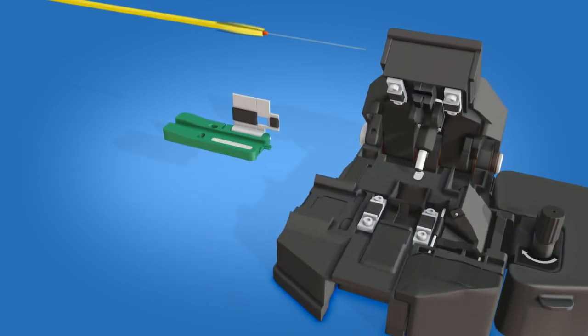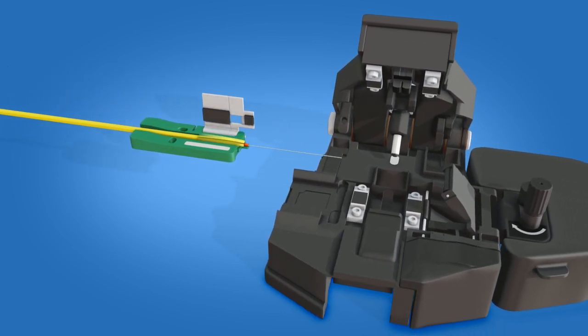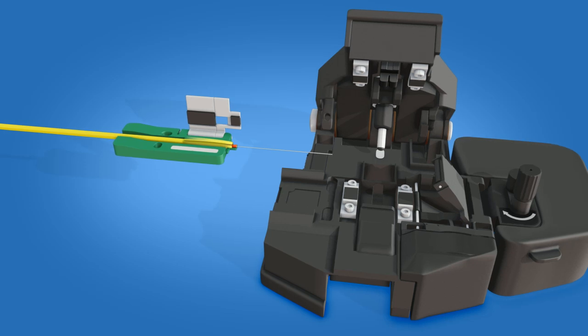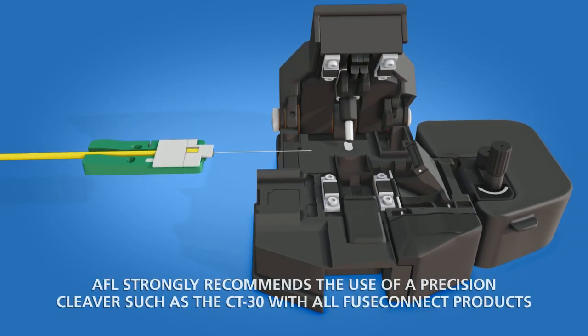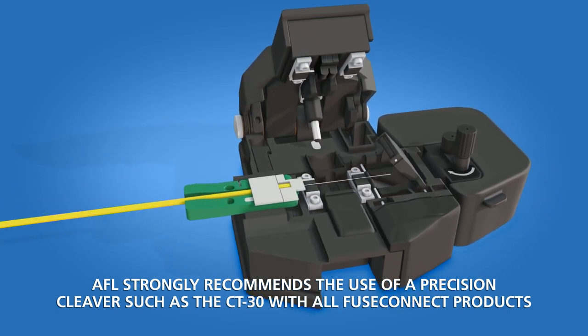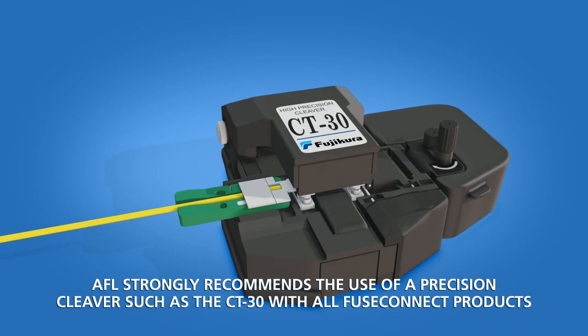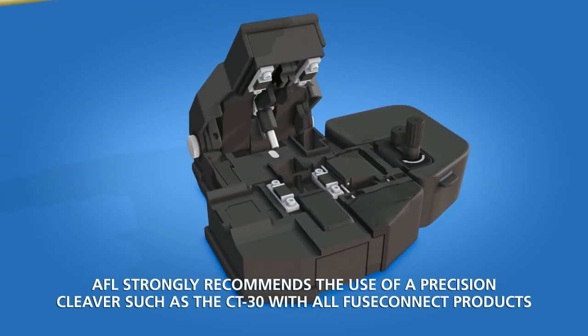Place the fiber into the three millimeter fiber holder with the end of the 900 micron coating at the end of the fiber holder. Close the fiber holder clamp. Load the fiber holder into a precision cleaver and cleave the fiber. Carefully remove the fiber holder with the cleaved fiber end from the precision cleaver.